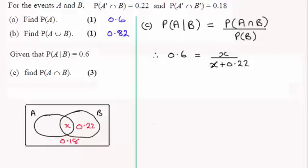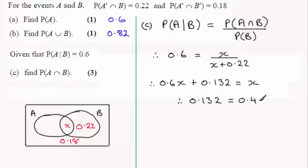I'm going to multiply both sides by X plus 0.22. So you're going to get 0.6 times X and 0.6 times 0.22 which is 0.132, and that's going to be equal to the X here. If I subtract 0.6X from both sides, I have 0.132 equals 0.4X.